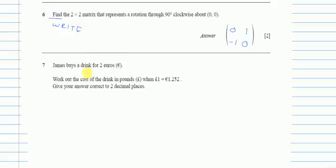Now let's see question number 7. James buys a drink for 2 euros. Work out the cost of the drink in pounds when 1 pound equals 1.252 euros, and give your answer correct to 2 decimal places. Whenever I get a question like currency conversion, I always solve it by the ratio method, which is very simple.